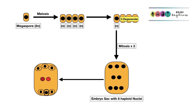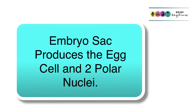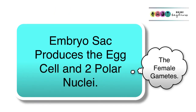Make sure you can discuss what's happening in this diagram and link it to a detailed labelled diagram of the ovule with those two polar nuclei and that egg cell. Make sure you can write the following key statement in your answer: the embryo sac produces the egg cell and the two polar nuclei.